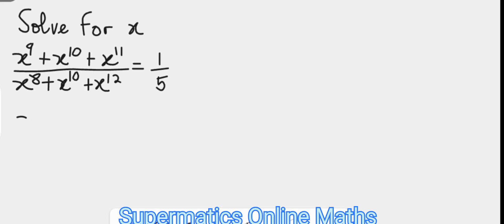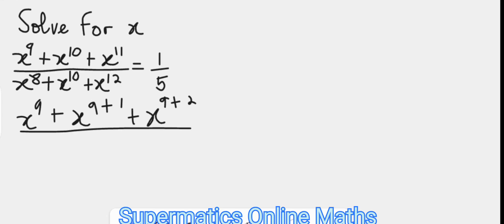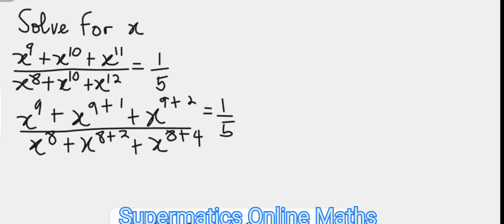The left-hand side is expressed as x to the ninth power, plus x to the ninth plus one power, plus x raised to power nine plus two. The denominator becomes x raised to power eight, plus x raised to power eight plus two, plus x raised to power eight plus four, and everything is equal to one over five.